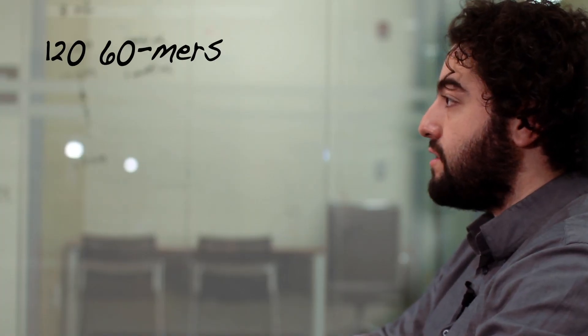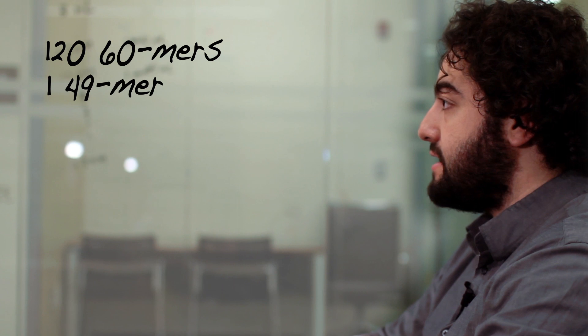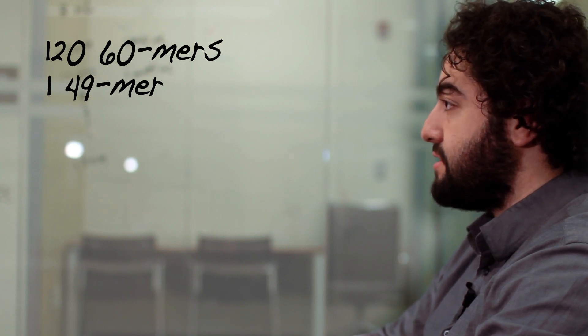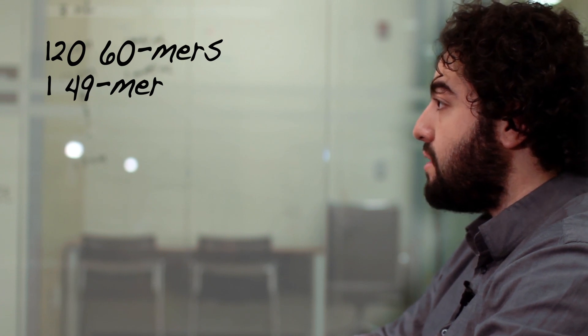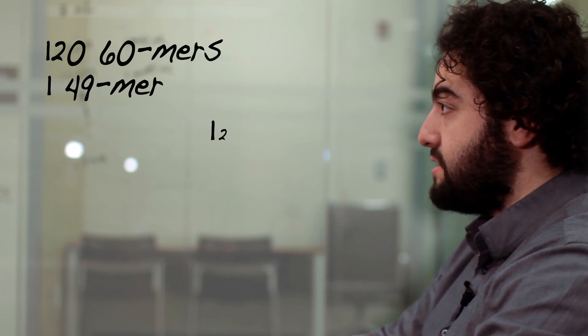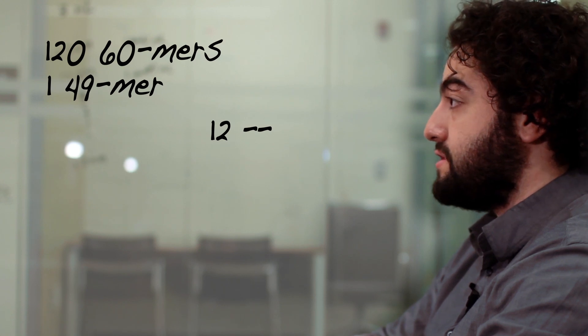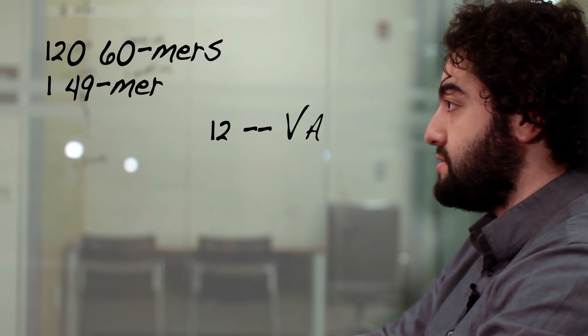We have chosen to use 60-mer oligonucleotides to tile the 7249 nucleotide M13 scaffold. This yields 120 60-mers and 1 49-mer. We have divided these oligonucleotides into two groups to avoid having to mix 121 oligos for each construct. Twelve oligos evenly spaced along the backbone are each stored in their own tubes and referred to as variable regions, or VARs.